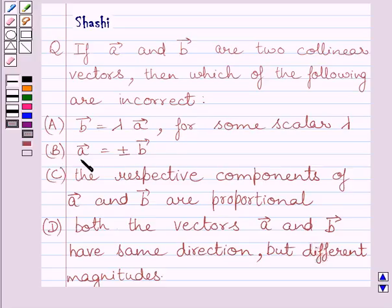B, A vector is equal to plus minus B vector. C, the respective components of vector A and vector B are proportional.